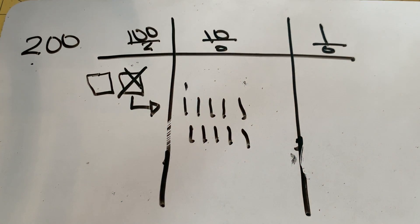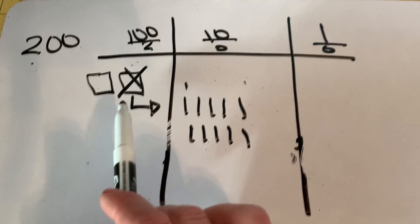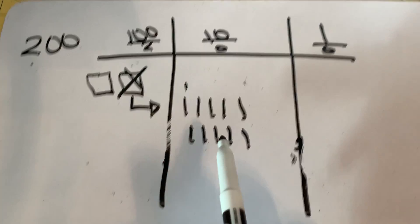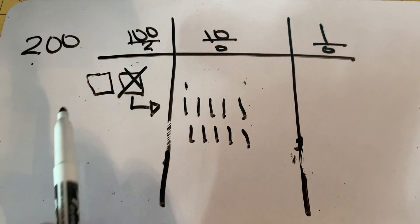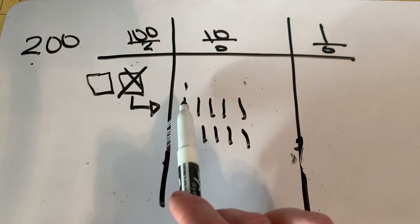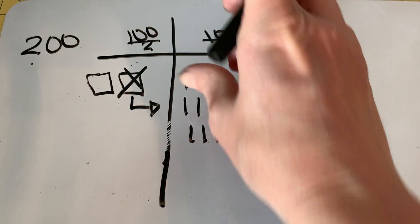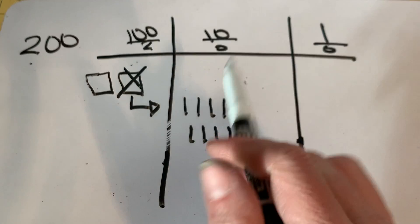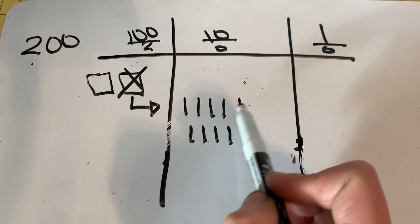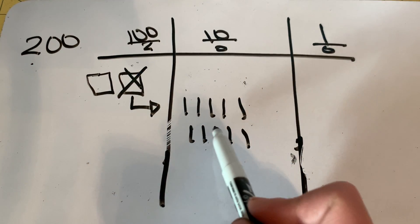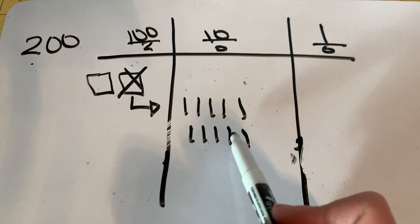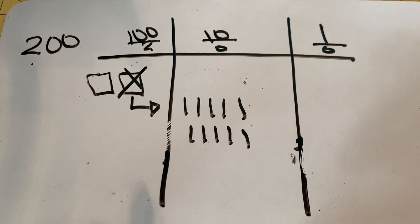Let's check to see if we still have 100. We didn't take any off — just moved it over from one place value to the next. So we have 100, 110, 120, 130, 140, 150, 160, 170, 180, 190, 200. Still have 200.